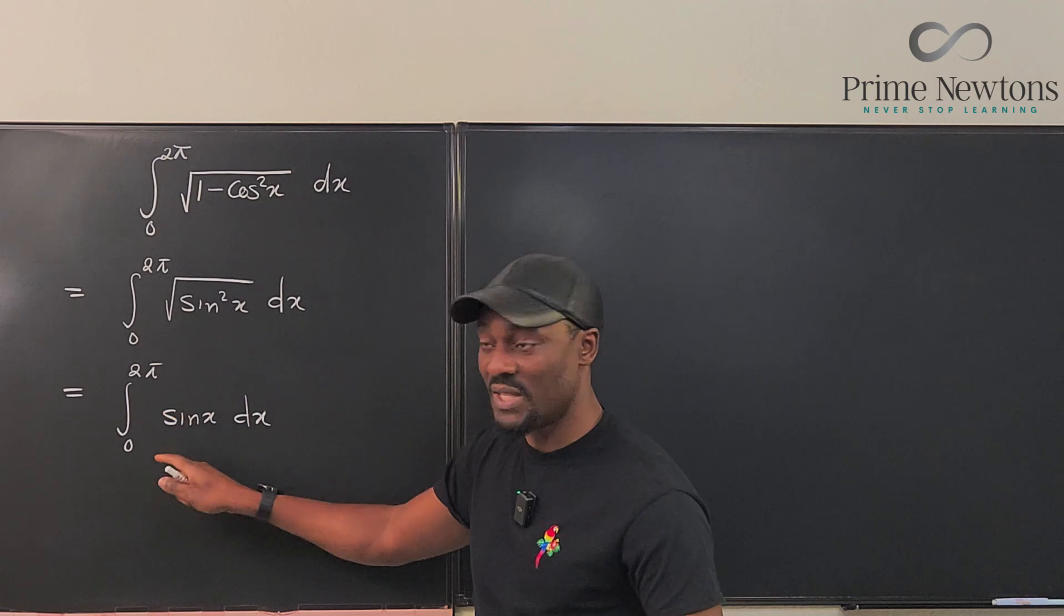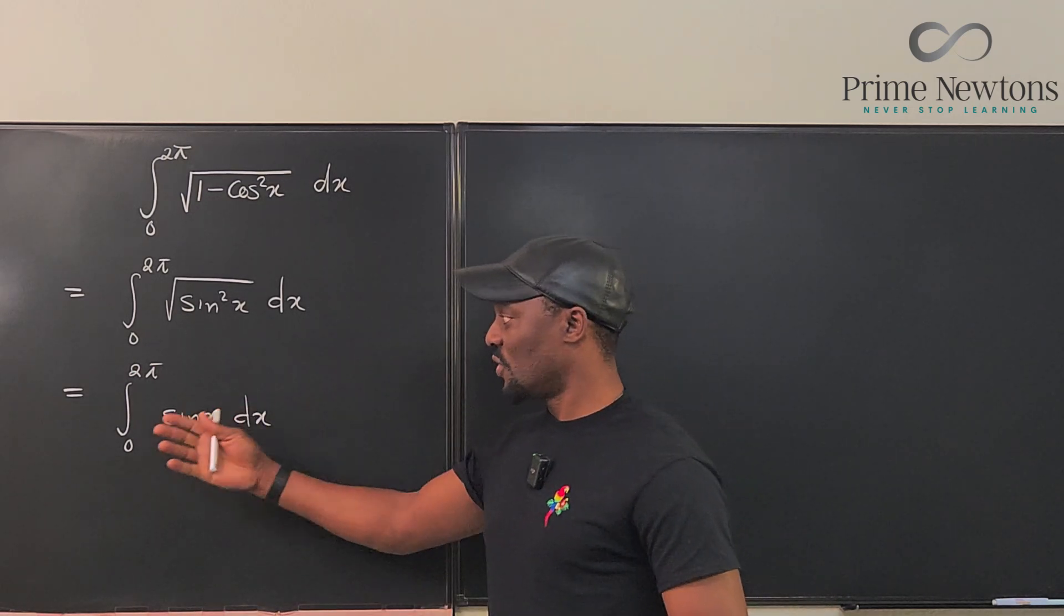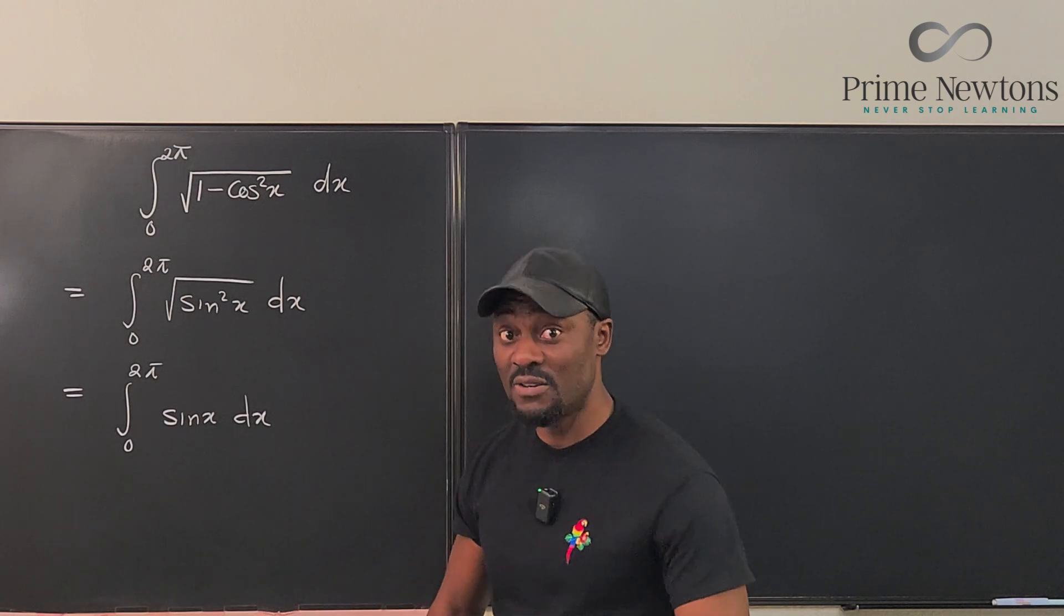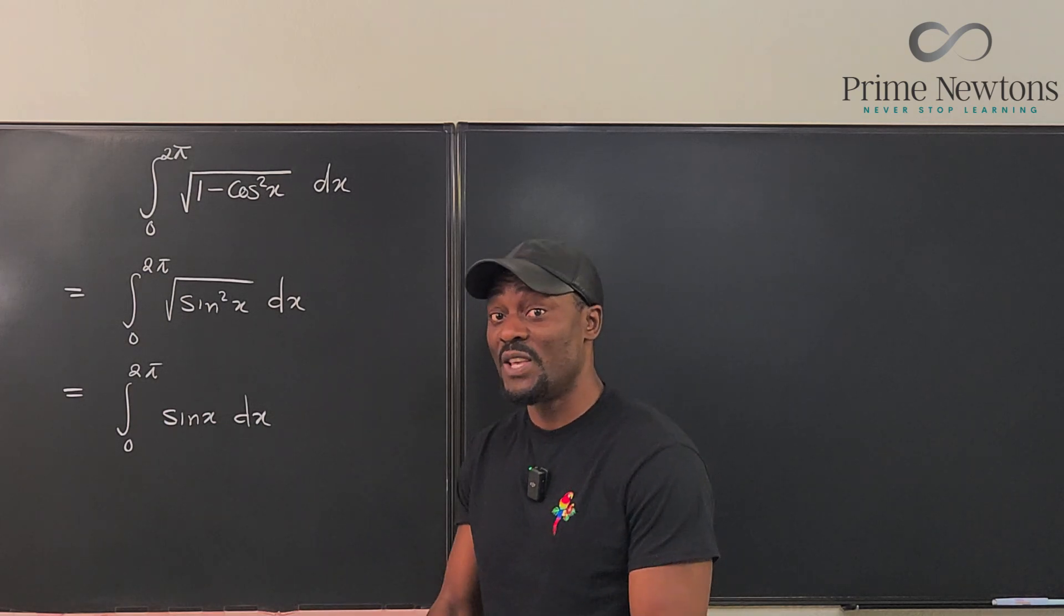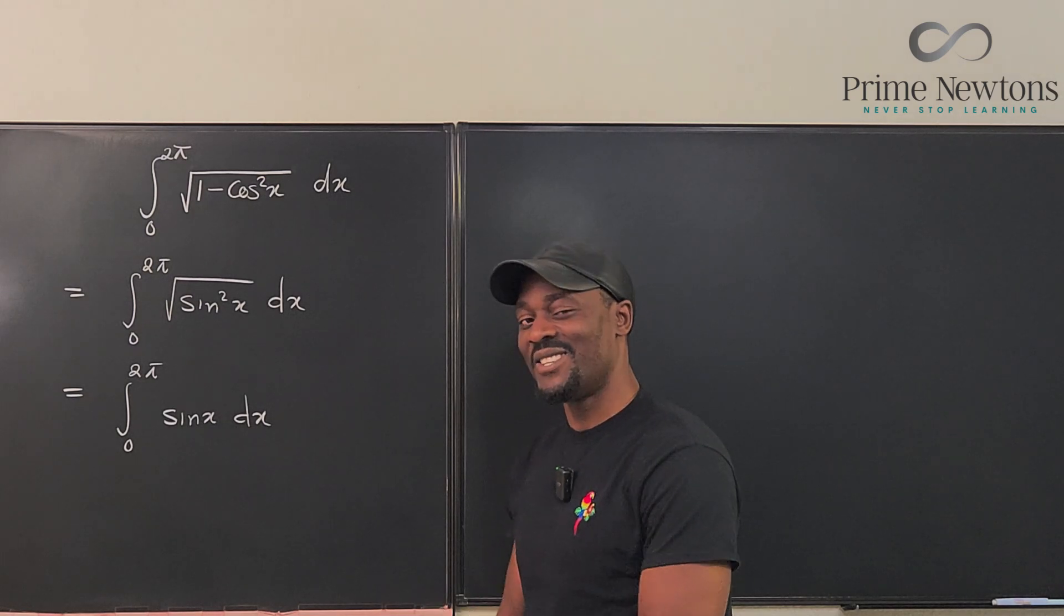You get minus cosine x and you evaluate from zero to 2π. You plug in 2π, you plug in zero, you get an answer. The beautiful thing about that is that you just generated an answer that is incorrect because of something we have done that is incorrect. Let's get into the video.